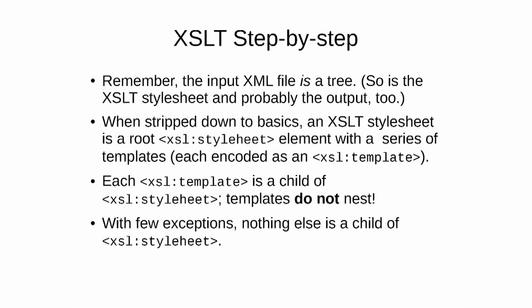When stripped down to its basics, the XSLT stylesheet is a root xsl:stylesheet element with a series of xsl:template elements inside it. Each xsl:template element is a child of stylesheet. There are no xsl:templates inside other xsl:templates or anywhere else. So we have xsl:stylesheet with a series of xsl:templates and that's it. Let's take a look at that.